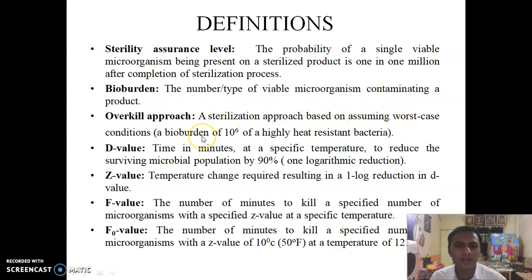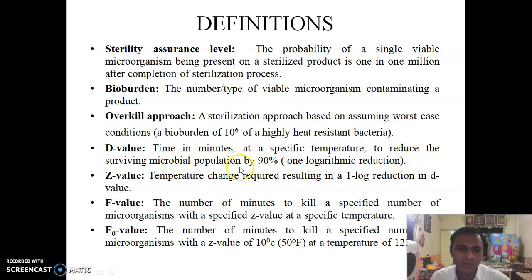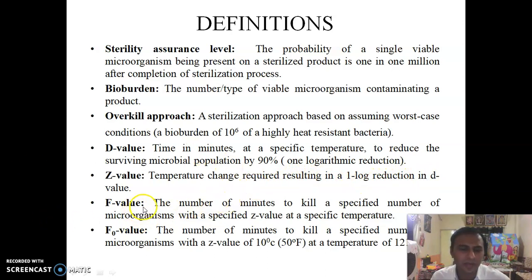The overkill approach assumes a bioburden of 10⁻⁶ of a highly heat-resistant bacteria. D-value: the time in minutes at a specific temperature required to reduce the surviving microbial population by 90%, i.e., one log reduction. Z-value: the temperature change resulting in a one log reduction in D-value. F-value: the number of minutes required to kill a specified number of microorganisms with a specified Z-value at a specific temperature.